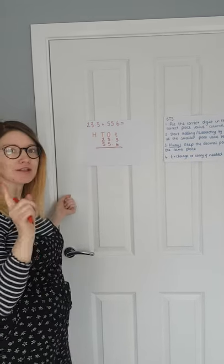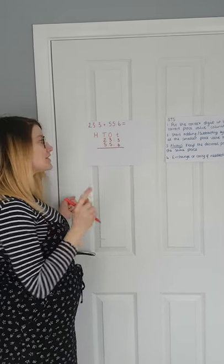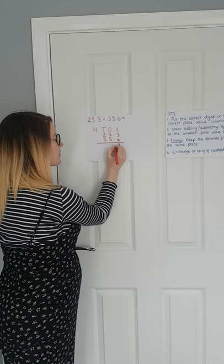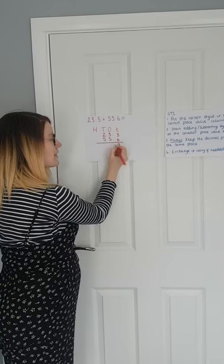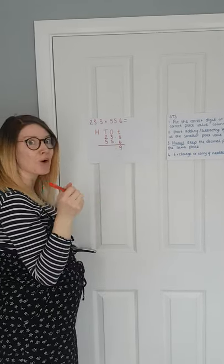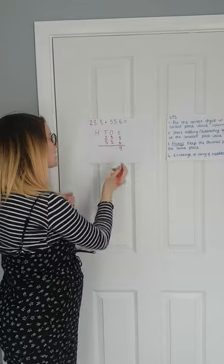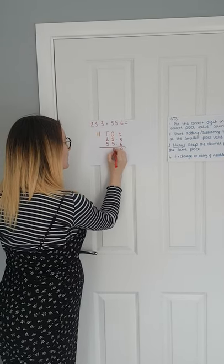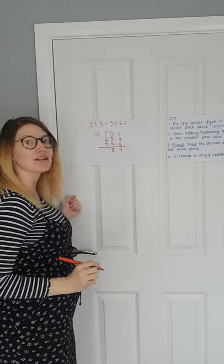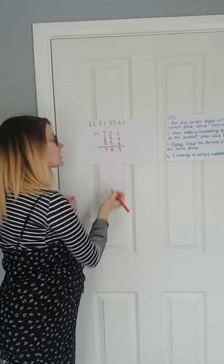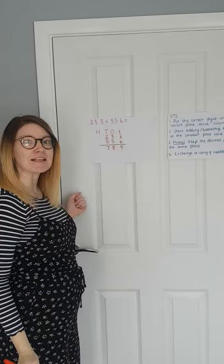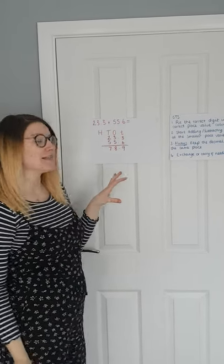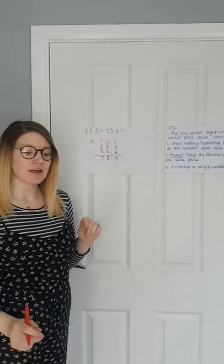This is the easy bit. Six tenths and three tenths is nine tenths. Remember, always keep the decimal place in. Five add three is eight, and five add two is seven. So our answer is 78.9. That's a nice easy addition to start you off.